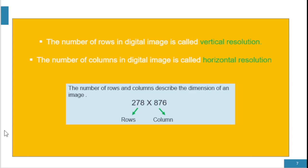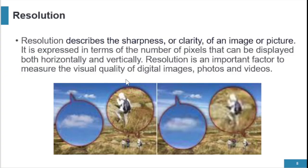The number of pixels determines the quality of an image. The total number of pixels present in a digital image is the number of rows multiplied by the number of columns. Next is resolution.